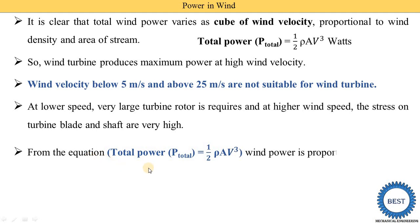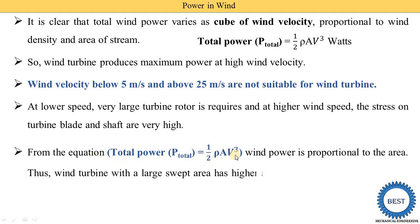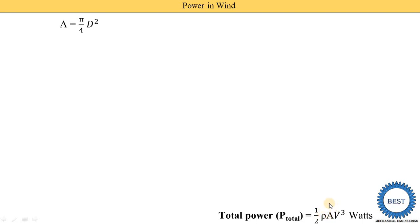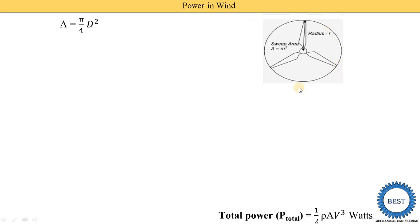From the equation P_total = ½ρAV³, wind power is proportional to the area. A wind turbine with a large swept area has higher available power. Normally, the area is circular with diameter d, so A = (π/4)d². Here you can see a diagram with three blades, and we draw a circle whose area is (π/4)d².